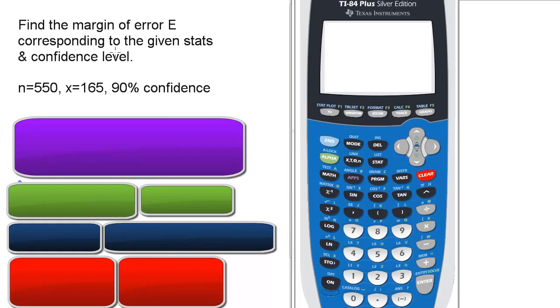Find the margin of error E corresponding to the given stats and confidence level. N is 550, X is 165, and we have a 90% confidence level.